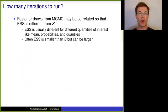So far I assume that we would have independent draws. Posterior draws from MCMC may be correlated, so that effective sample size is different from S. And this ESS is usually different for different quantities of interest, like mean, probabilities, quantiles, so need to be computed separately for different quantities. Often ESS is smaller than S, so we have less efficiency. It can be in special cases also larger.